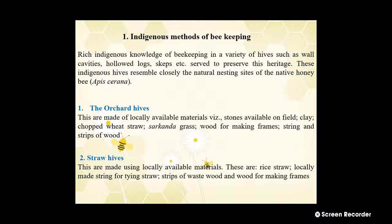The first method is the indigenous method of bee keeping. Rich indigenous knowledge of bee keeping uses a variety of hives such as wall cavities, hollowed logs, and escapes to preserve this heritage. These indigenous hives closely resemble the natural nesting sites of the native honey bee, Apis cerana. The indigenous method divides into the following types. First is the orchard hive, made up of locally available materials like stones, clay, wheat straw, ciranda grass, wood for making frames, string, and strips of wood.